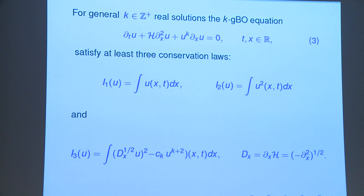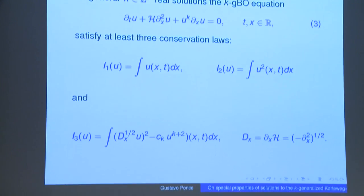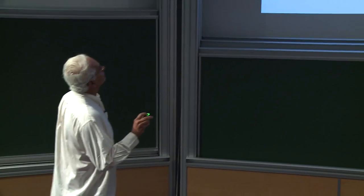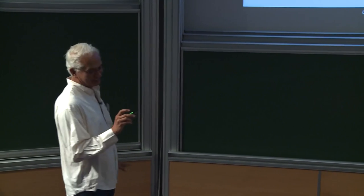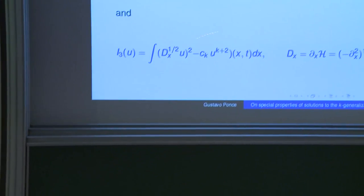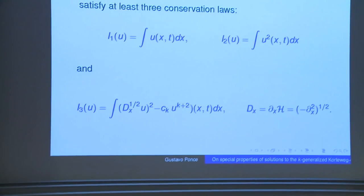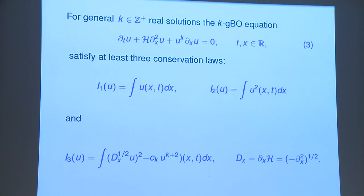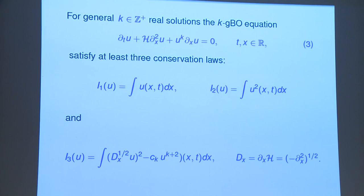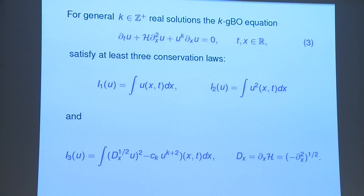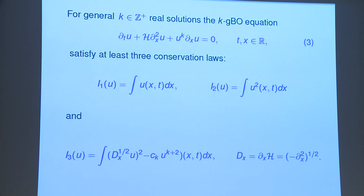Question from audience: "At least 3 or at most?" Response: You have those 3 that are helpful, and you will see that for k equal to 2, you don't have anything more than that. You will see that you have a problem.